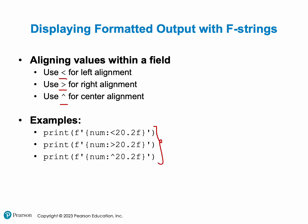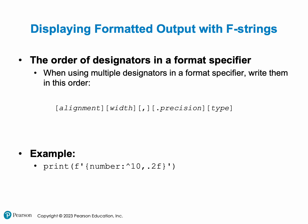Here is the formula for your format specifiers: first you specify the alignment, then how many characters you want reserved for your string, then whether you want your number separated by commas or not, then how many decimal points you want, and finally what type of number you want to print. Pretty simple.